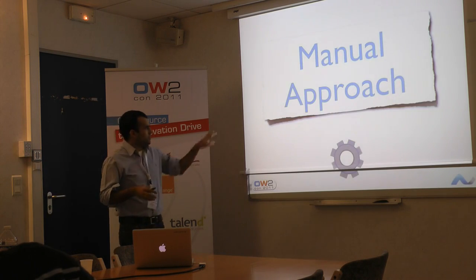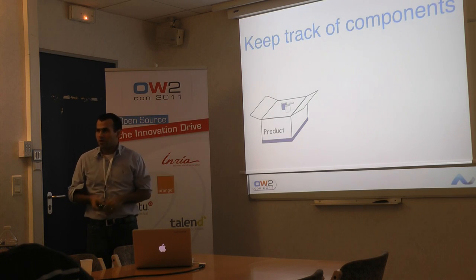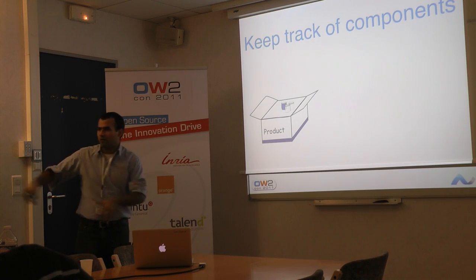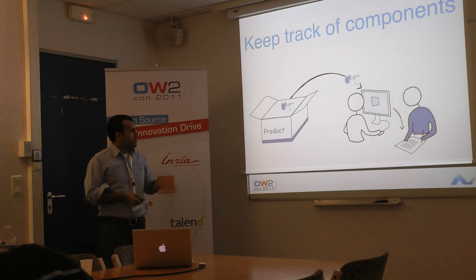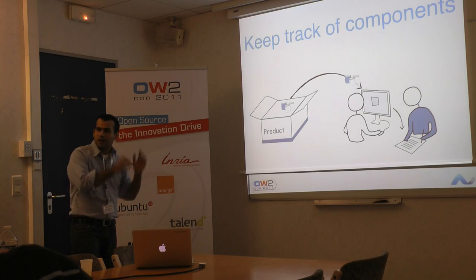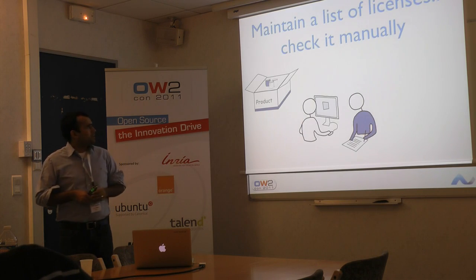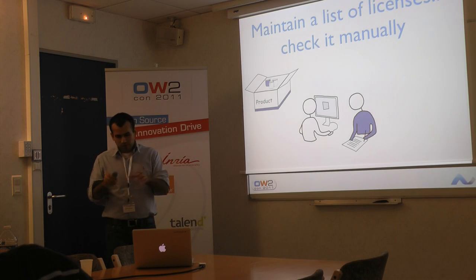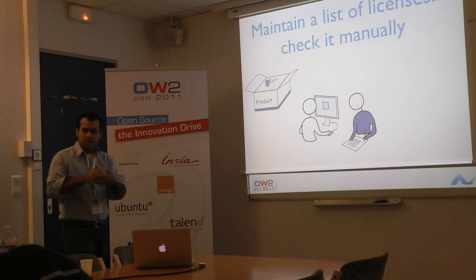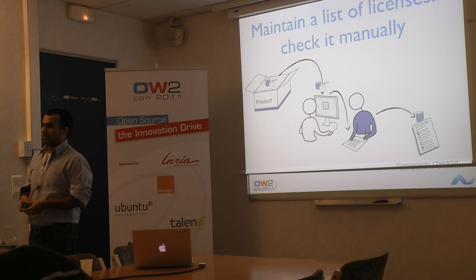Let me talk about the first approach, the manual one. In the manual approach, you keep manual tracking of every component. You open up your product in whatever phase you want — when the code is written or when you have actually delivered the product. Then you make a list of the different components, annotate the versions, etc. You can do that with a spreadsheet. Then you maintain a list of those licenses and check for each component its license and its compatibility, going component by component, iteratively, until you have completed your license checking process.